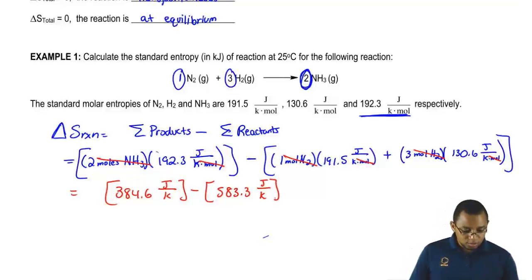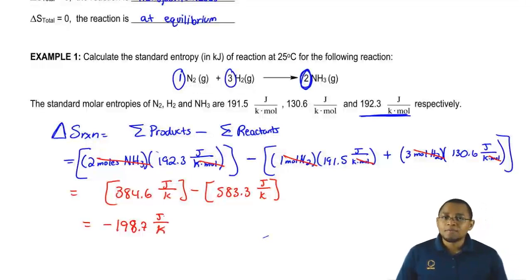Now just subtract those two, that gives me negative 198.7 joules over Kelvin. Remember, I asked for the answer in kilojoules, not in joules, so we have to do one more conversion.